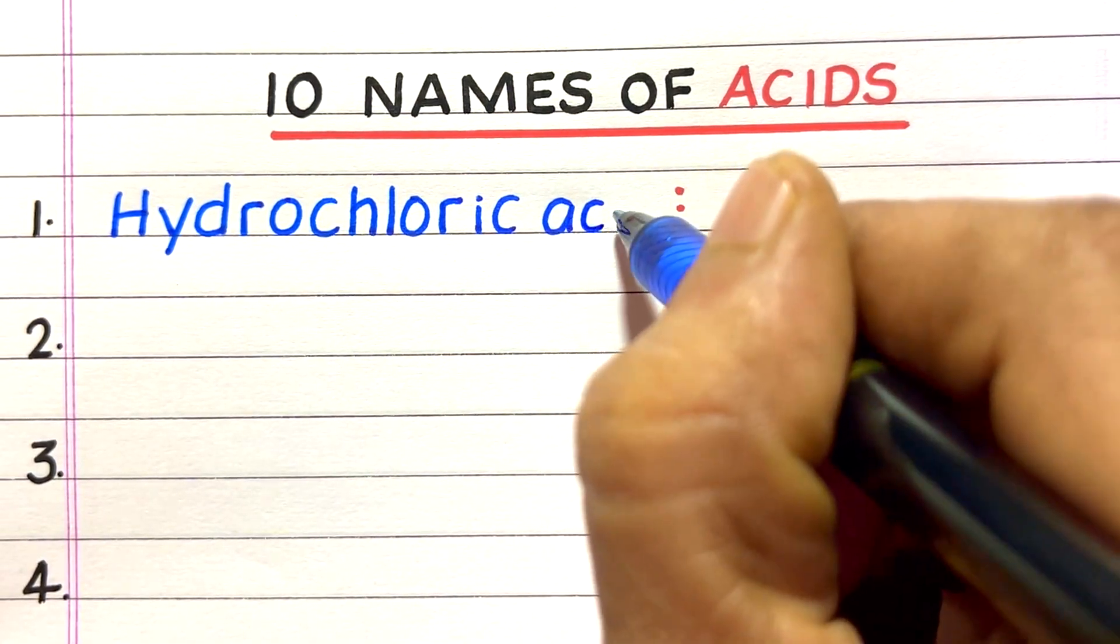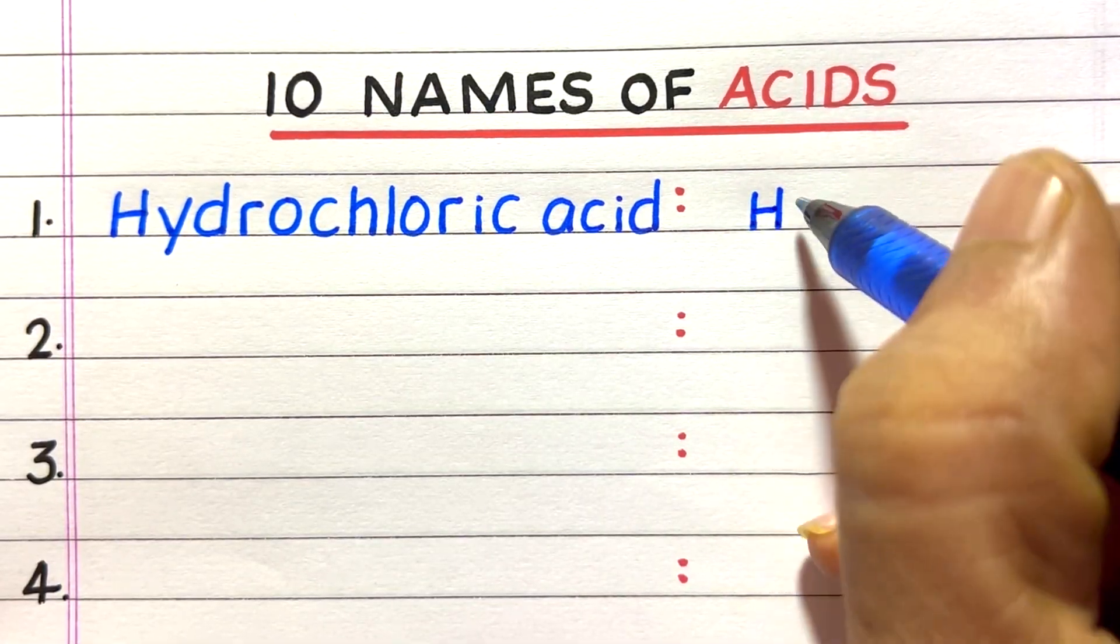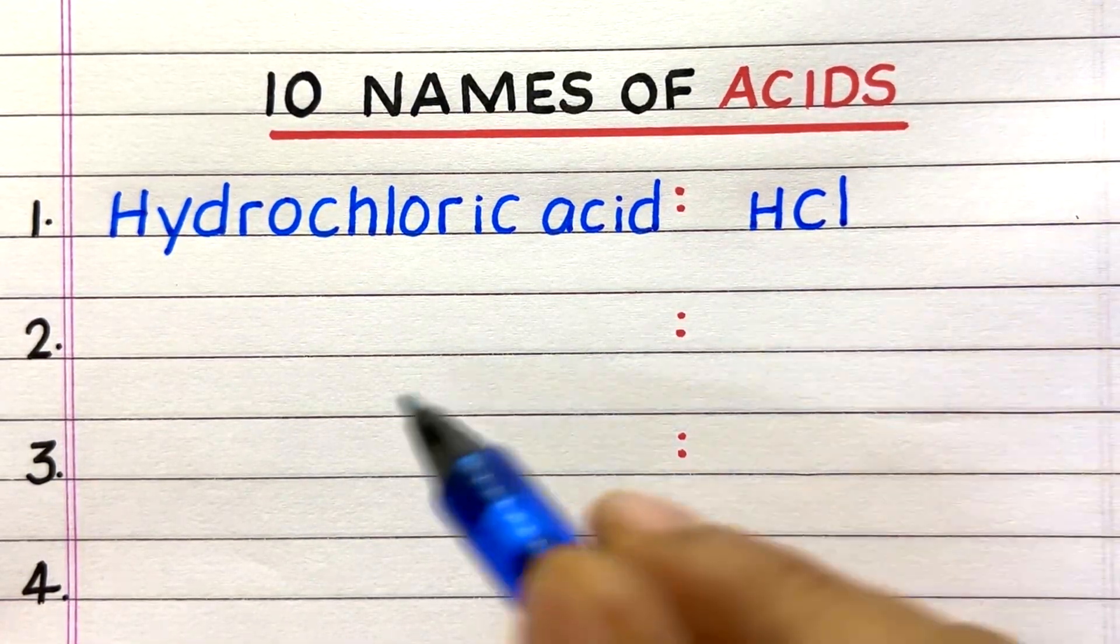First name of the acid is hydrochloric acid. Its formula is HCl.